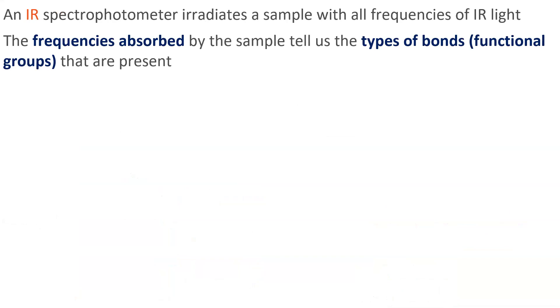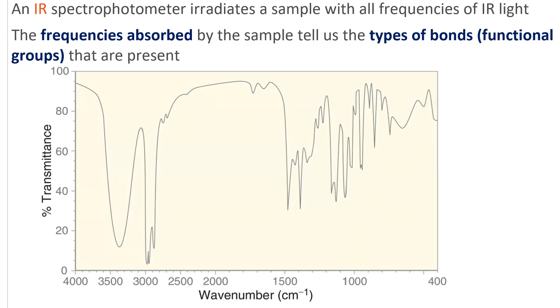An IR spectrophotometer irradiates a sample with all frequencies of infrared light, and the frequencies that are absorbed by the sample tell us the types of bonds that are present in the molecule. An IR spectrum, as shown here,